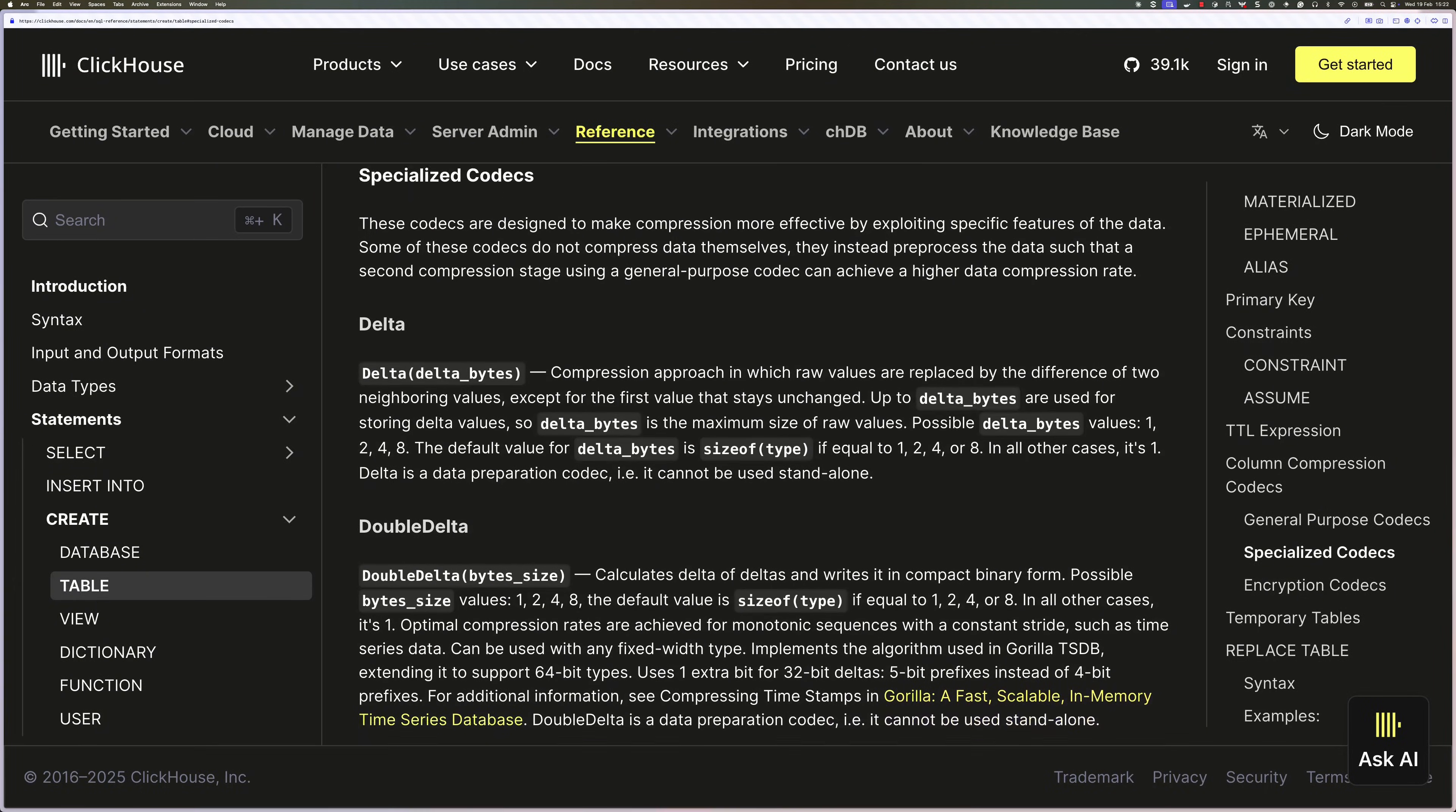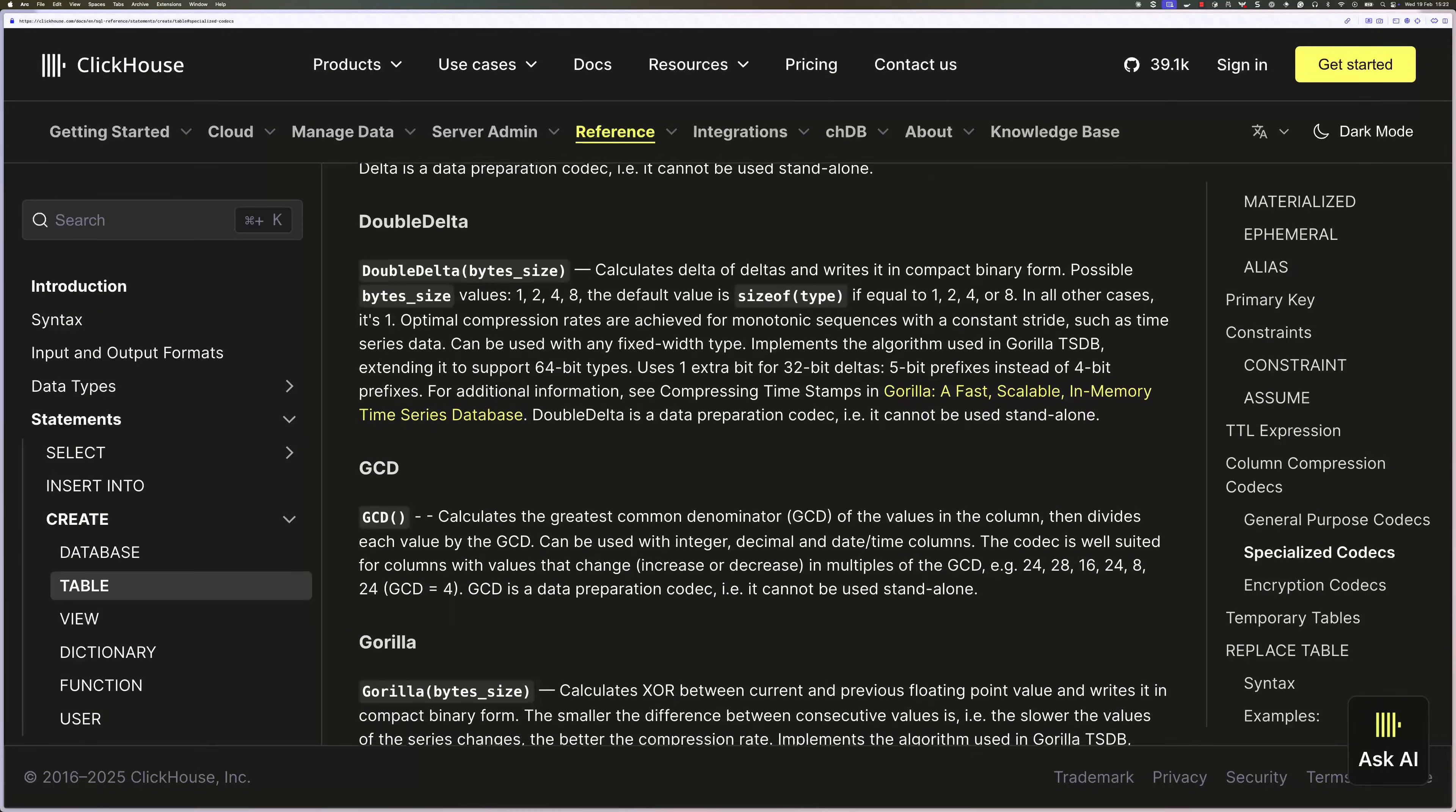As well as these general compression algorithms, ClickHouse also supports a wide range of specialized algorithms. So Delta, Double Delta, GCD, Gorilla, and more.